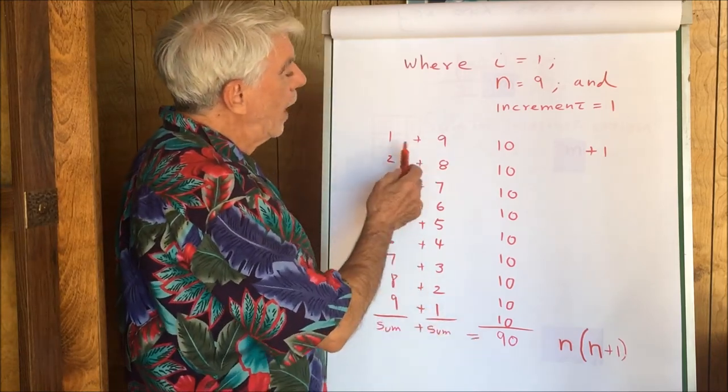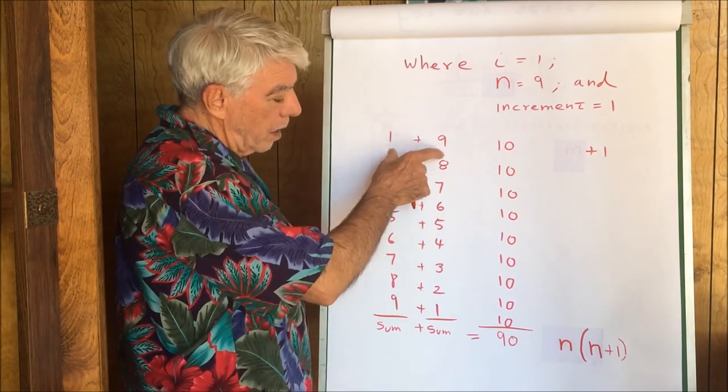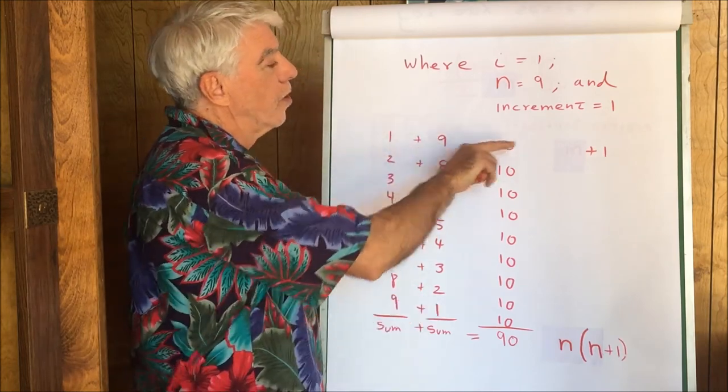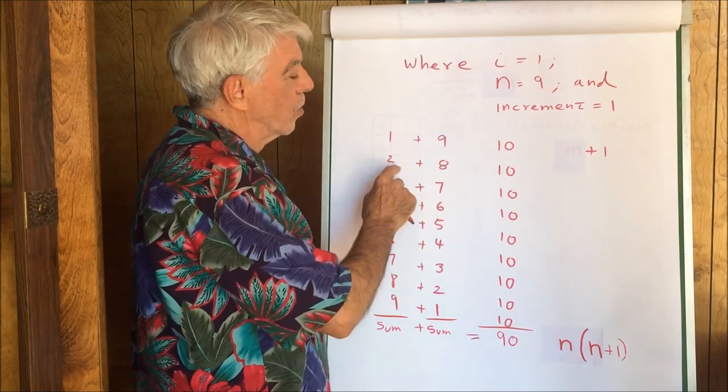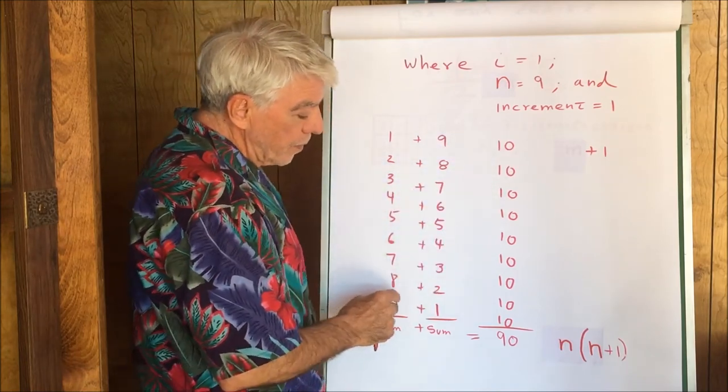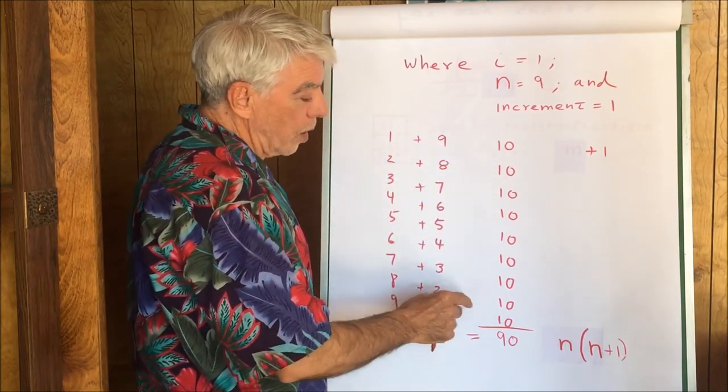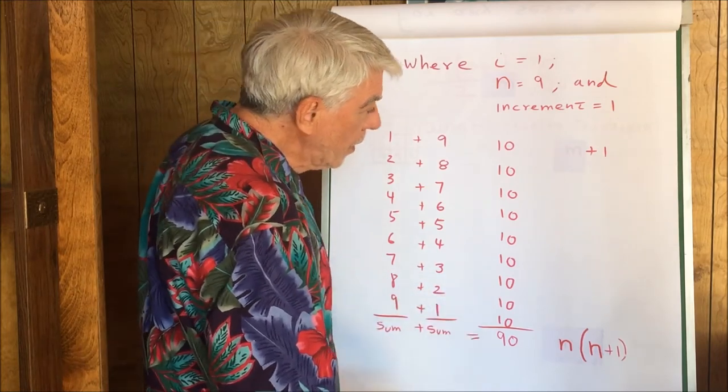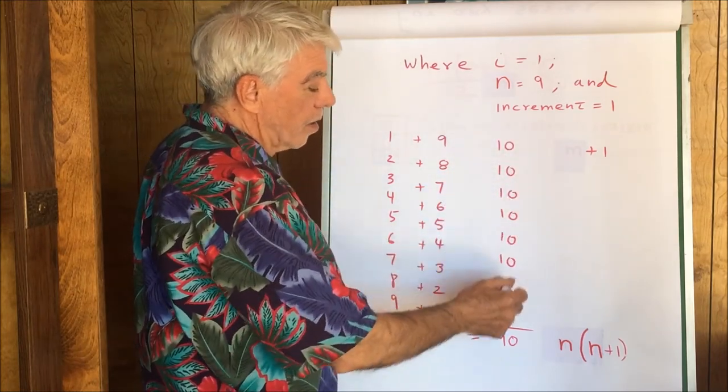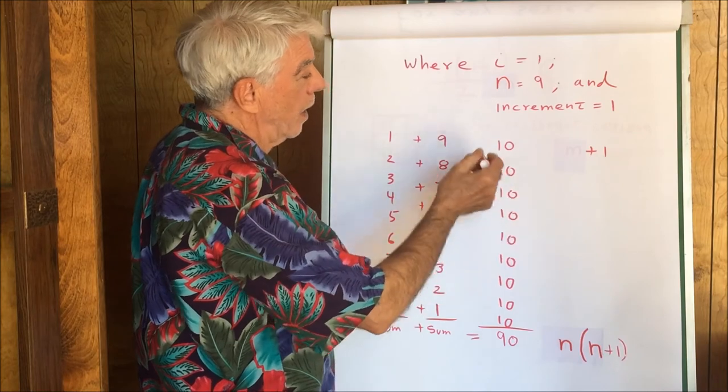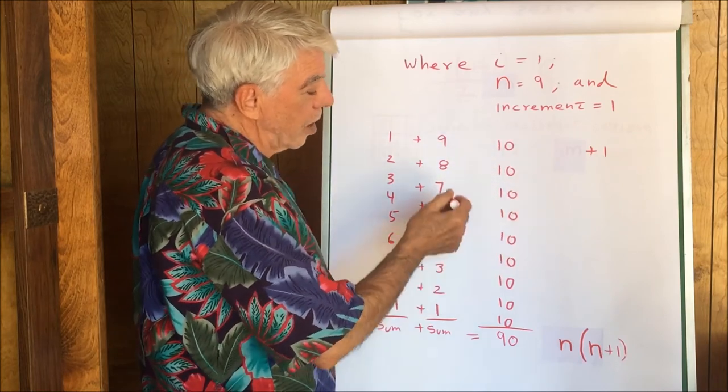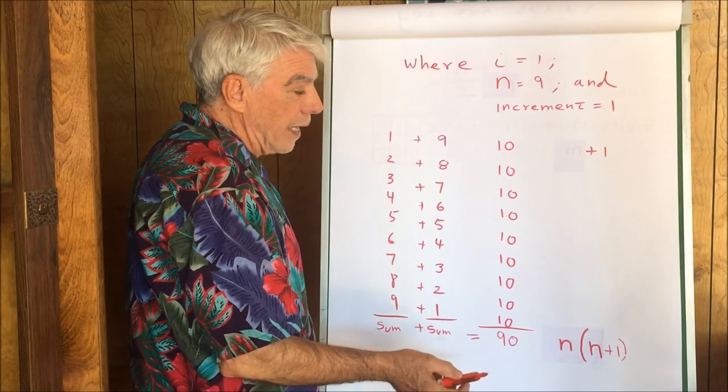And if we add these two series together this way, 1 plus 9 gives us 10, 2 plus 8 gives us 10. All the way down to the end, 9 plus 1 gives us 10. And then add the resulting column. So, 10, 9 times. All the sums came out to be the same. 10's here, the sum is 90.